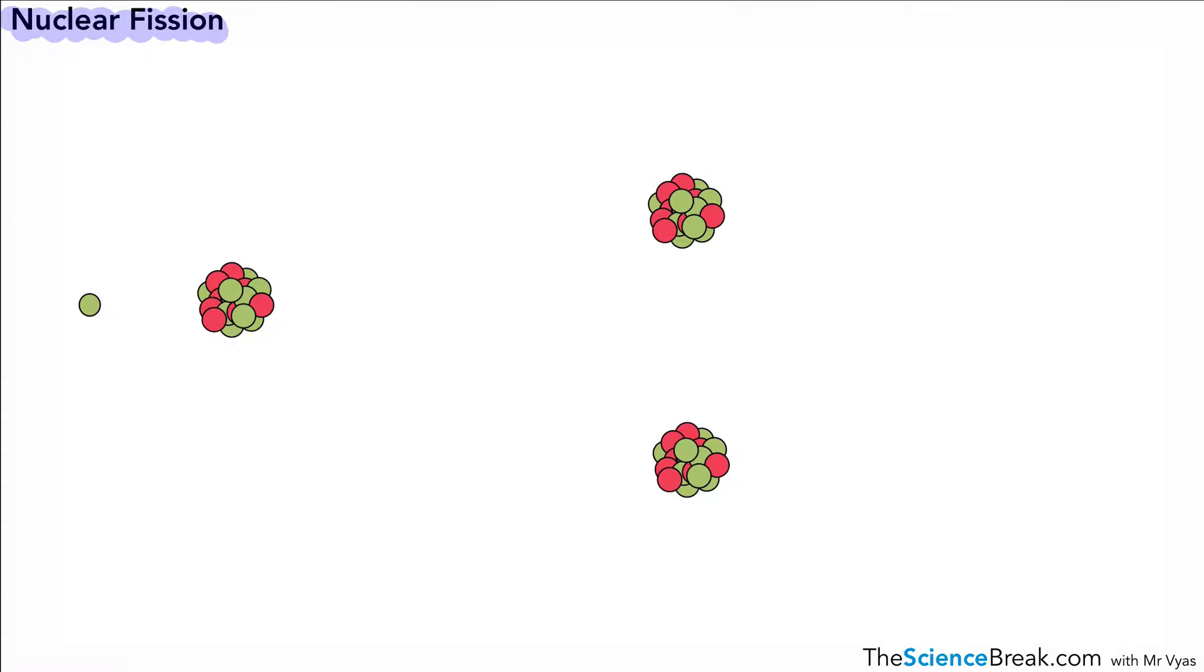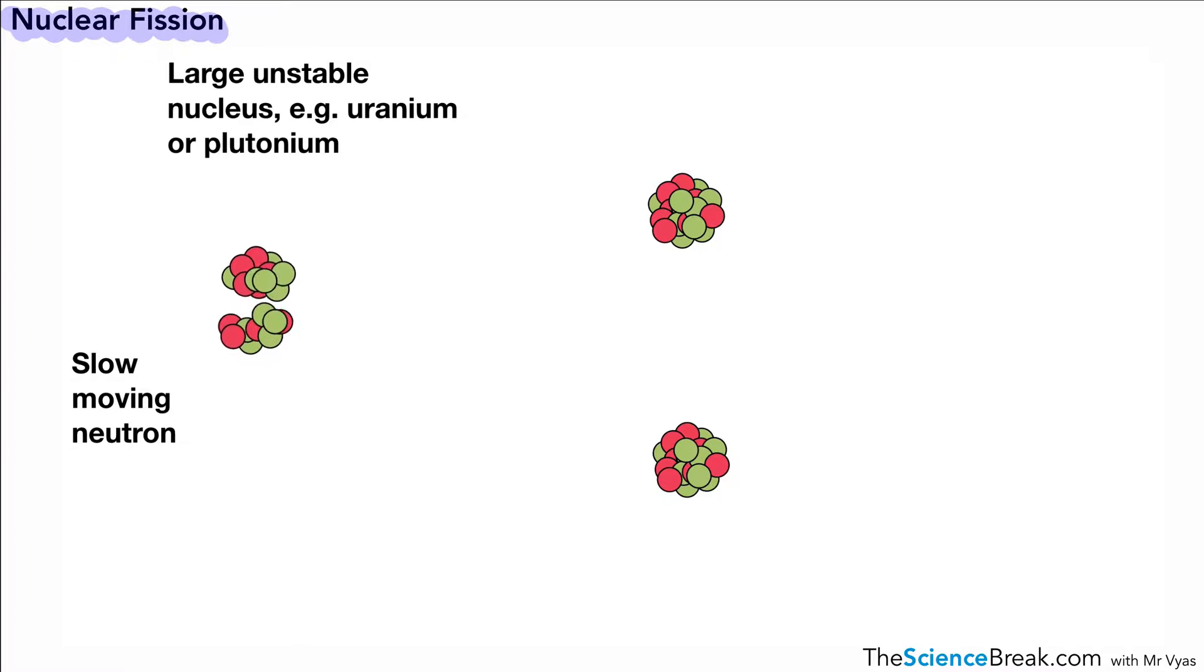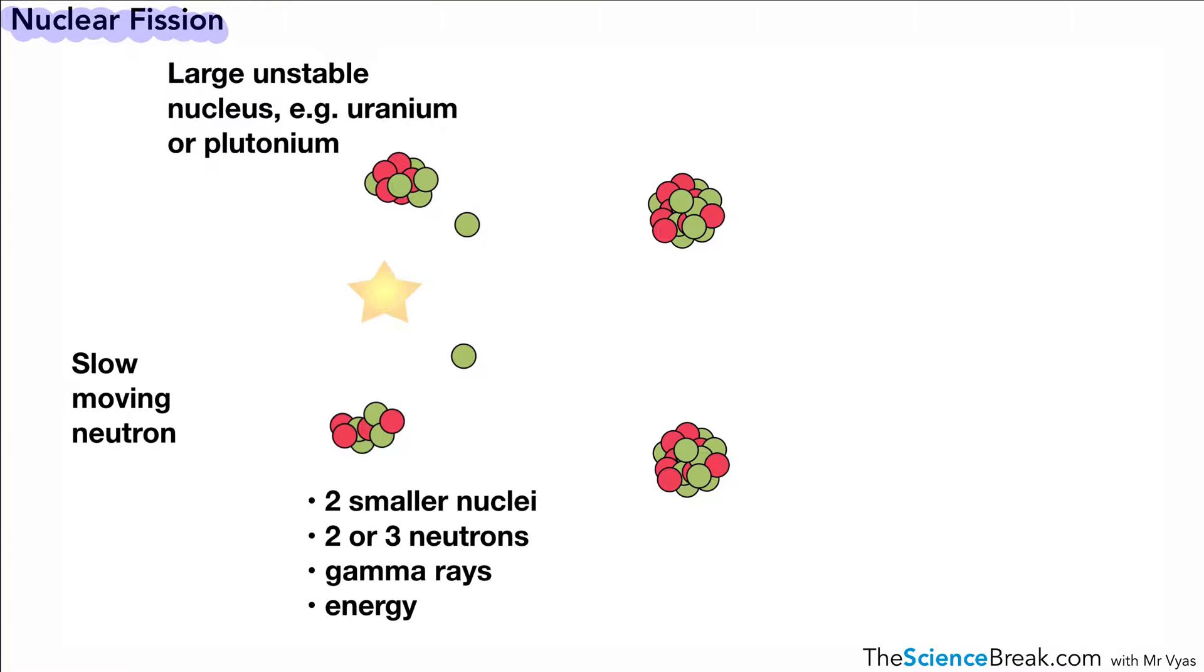What we have here on the left hand side is a slow moving neutron. This is what's going to cause the unstable nucleus to split. There's our large unstable nucleus. The neutron is absorbed by the nucleus and it splits into two smaller, roughly equal size nuclei. But we get other products as well: two smaller nuclei which are roughly the same size, the release of two or three neutrons, the release of gamma radiation in the form of gamma rays, and the release of energy.